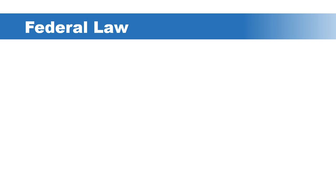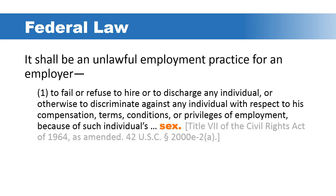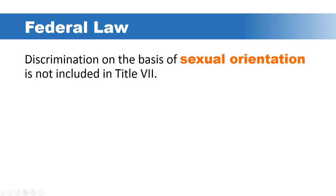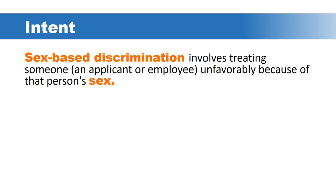With the definitions as our backdrop, let's consider what the federal law actually says. Title VII of the Civil Rights Act of 1964 states it shall be unlawful employment practice for an employer to fail or refuse to hire or to discharge any individual, or otherwise discriminate against any individual with respect to compensation, terms, conditions, or privileges of employment. The federal law lists several protected classes, one of which is sex. You will notice that discrimination on the basis of sexual orientation is not included in Title VII. The law's intent is on sex-based discrimination, which it interprets as involving the unfavorable treatment of an applicant or employee because of that person's sex.